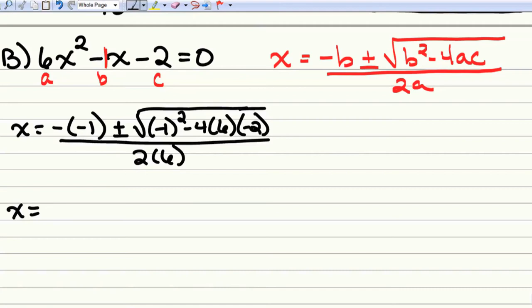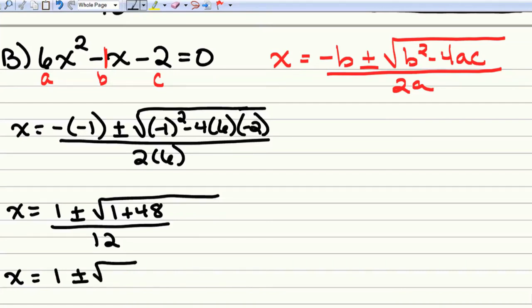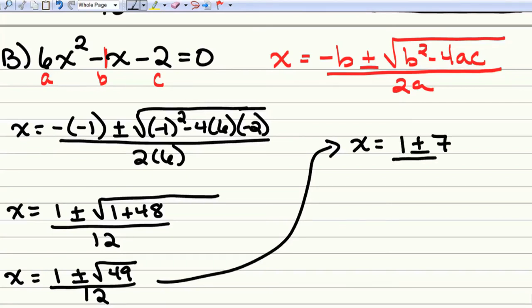The opposite of negative 1 is 1. Plus or minus the square root of negative 1 squared is 1. Negative 4 times 6, negative 24. Negative 24 times negative 2 is a positive 48. So, double check your signs. So, that gives us x equals 1 plus or minus the square root of 49 over 12. What's the nice thing about the square root of 49? It's a perfect square. So, we have 1 plus or minus 7 divided by 12.